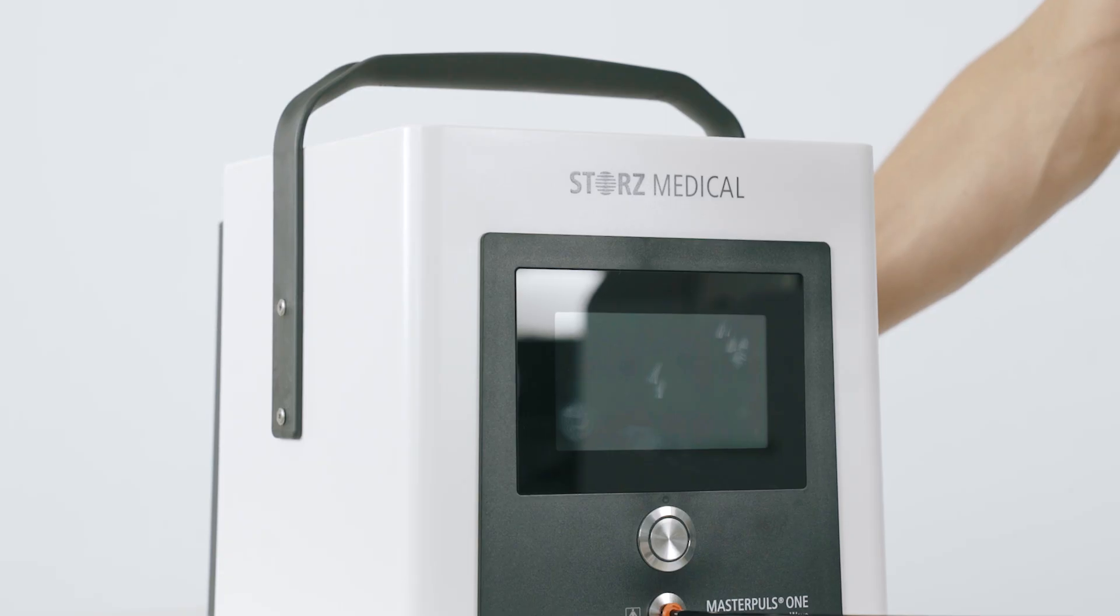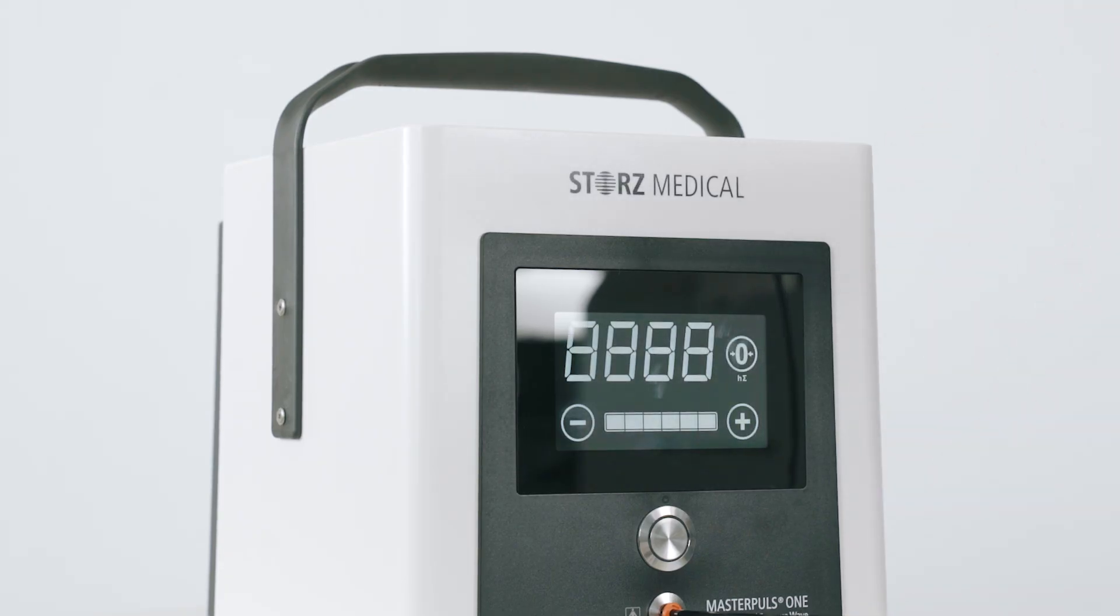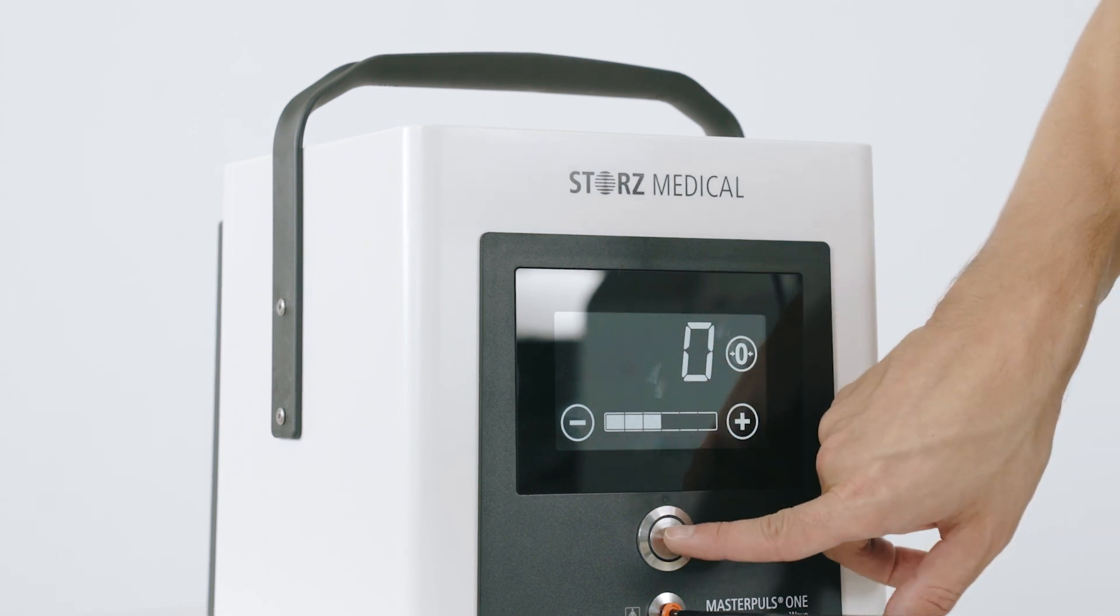The machine is easy to operate. Simply turn on the power at the back of the machine, select Energy Level 3, which comes standard, and press Start to begin.